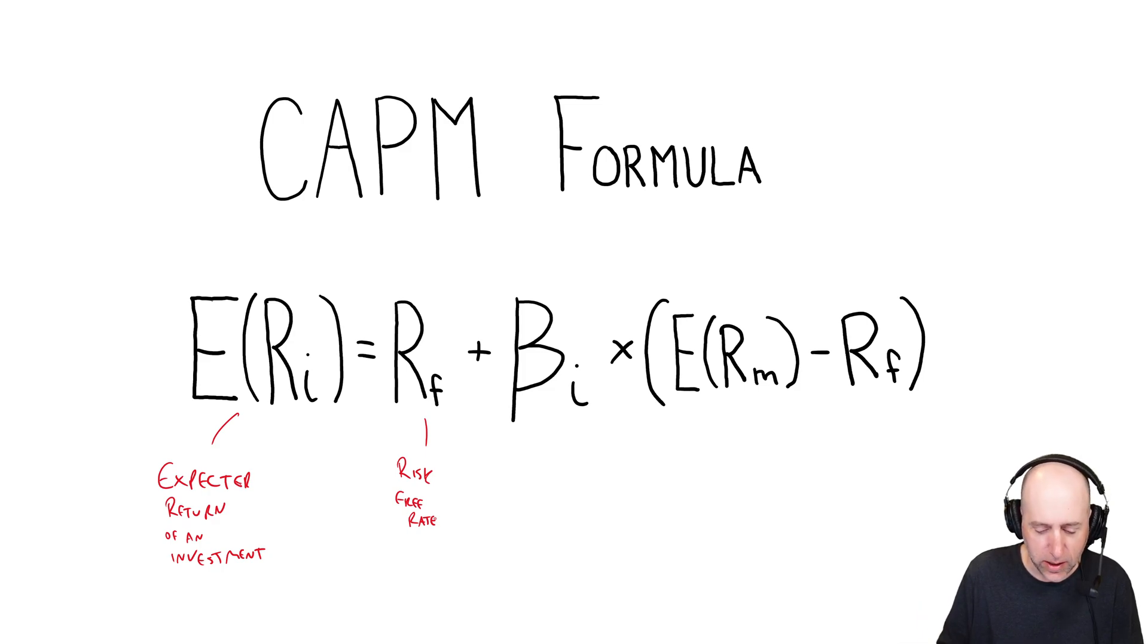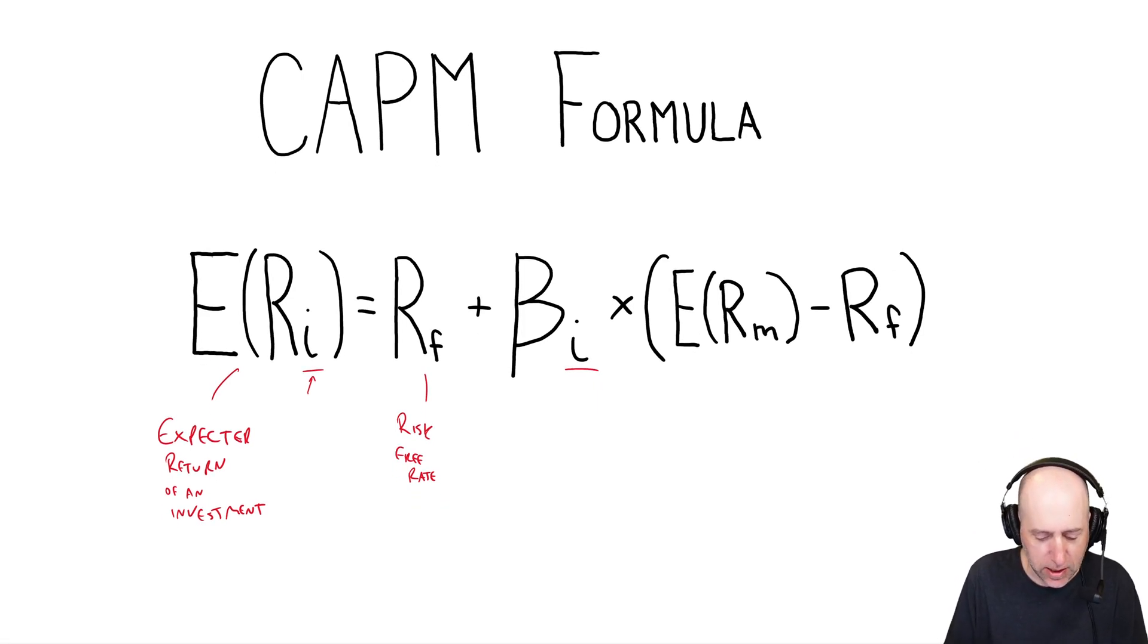So you better be making more than 4% plus beta of the investment. So the lowercase i is the investment that you are analyzing, the company you're considering. I'm thinking about buying stocks in Coca-Cola, the beverage. So the expected return of Coca-Cola stock equals the risk-free rate, the U.S. government T-bill rate, plus beta of Coke. And we'll put some numbers in here in a minute.